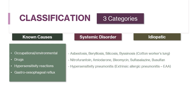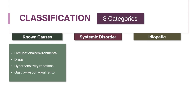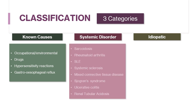Hypersensitivity reactions include hypersensitivity pneumonitis, previously known as extrinsic allergic alveolitis, in which there is a hypersensitivity reaction to certain organic products. Systemic disorders that can cause ILD include sarcoidosis, rheumatoid arthritis, SLE, systemic sclerosis, mixed connective tissue disease, Sjögren's syndrome, and at times ulcerative colitis, renal tubular acidosis, and autoimmune thyroid disease.